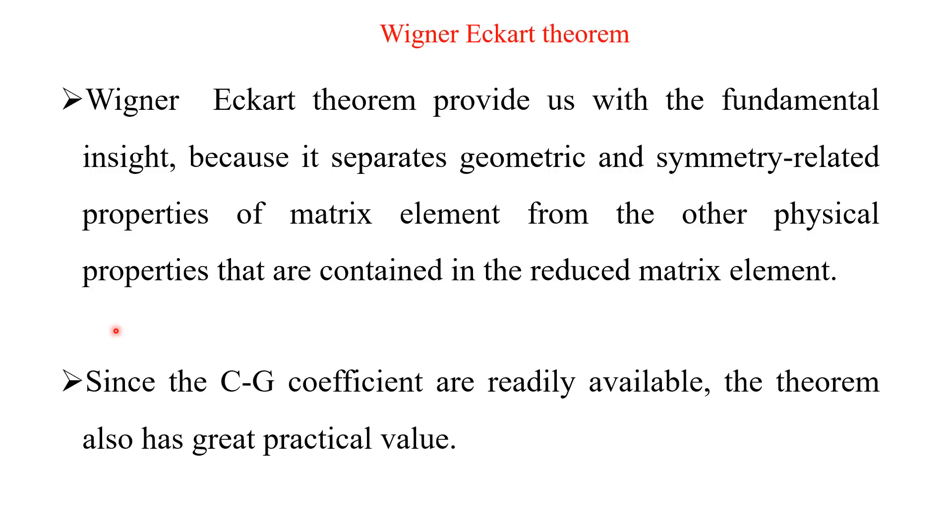If you take care of J, J is nothing but L plus S. S is the spin operator and L is the optical angular momentum operator. M is the magnetic momentum operator. But there is no way to accommodate the principal quantum number. Here, other than angular part, remaining part will be taken care of this reduced matrix element.